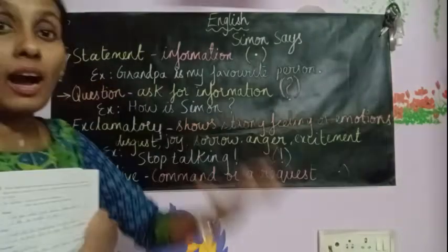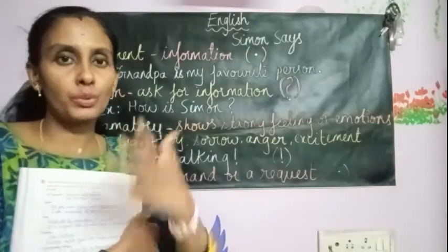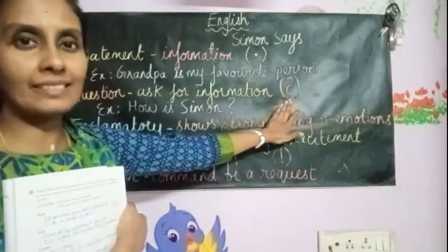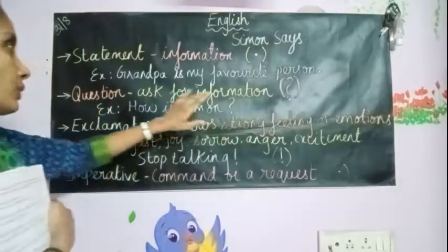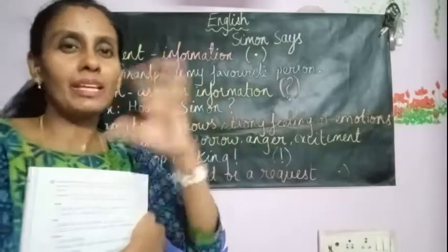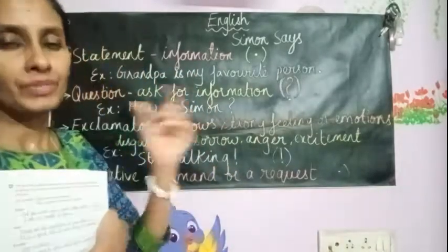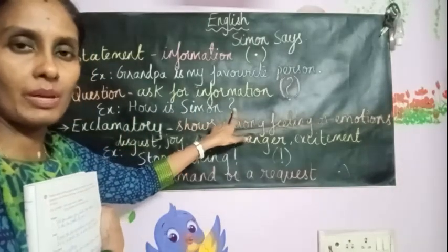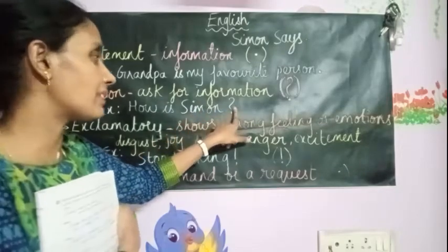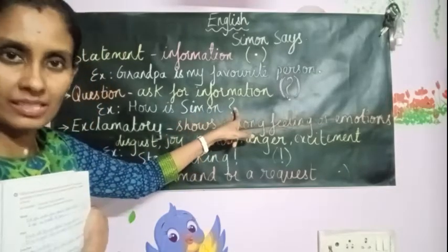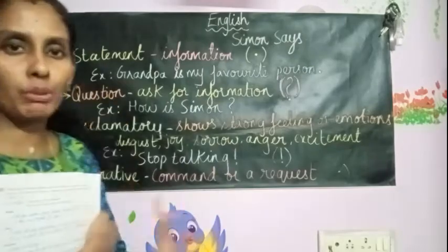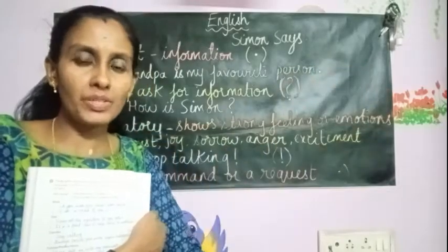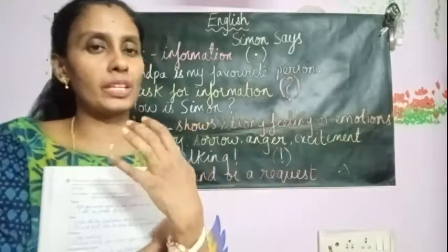The second kind of sentence is a question. When we ask for information, that is called a question. Any sentence which ends with a question mark is usually a question. For example: 'How is Simon?' — I am asking for information about the dog Simon, and my sentence ends with a question mark. A question usually asks for information; a statement usually gives information.